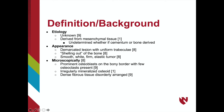Although the cause is unknown, this neoplasm is derived from mesenchymal tissue. Radiographically, the lesion is well demarcated with uniform trabeculation. These lesions have a characteristic shelling out upon removal, meaning they are easily separated from bone. The removed mass will be white, smooth, elastic, yet firm tumors.